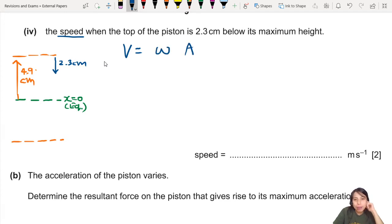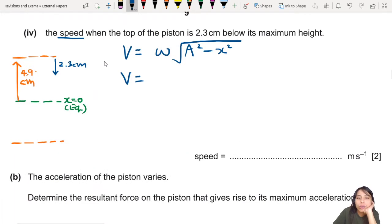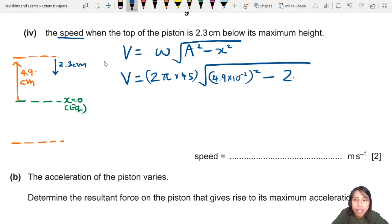So V equals ω√(A² - x²). Let's see if we can do this. Omega is 2π times 45. Amplitude we know is 4.9 times 10^-2 squared. But what is the displacement? Do not write 2.3, that's wrong. 2.3 is not your displacement. You need to know that your displacement currently is from equilibrium out to a certain distance. This is your x that you want to plug in. So how far is that? You calculate: this will be 4.9 minus 2.3 centimeters.